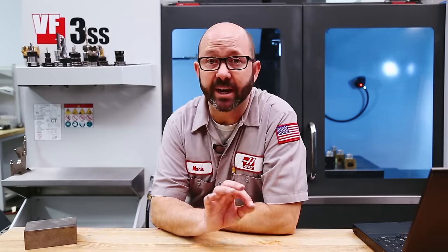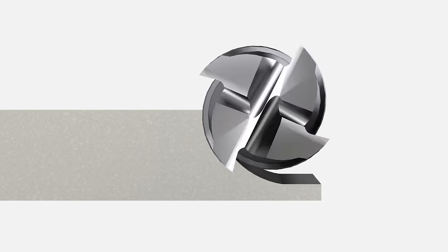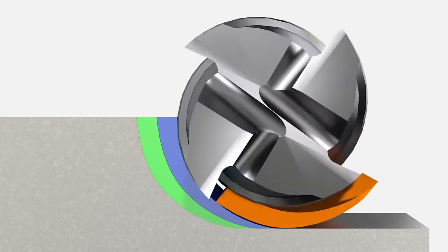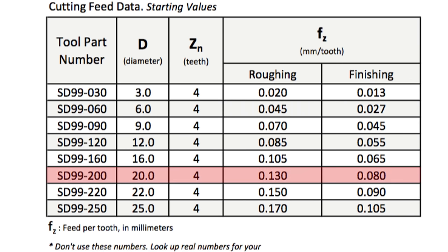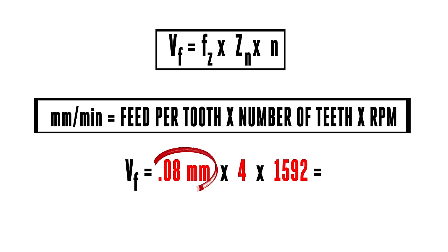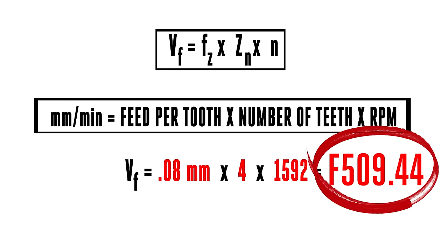We want our tool to take a very specific size bite with each tooth — this is our feed per tooth in millimeters. Just like our cutting speed, the book or PDF will give us that feed per tooth value. The catalog says that for my tool, material, and type of toolpath, 0.08 millimeters per tooth is a good starting range. So: 0.08 (our feed per tooth) times 4 (our number of teeth) times 1,592 (our RPM) gives us our millimeters per minute feed rate: F509.44.